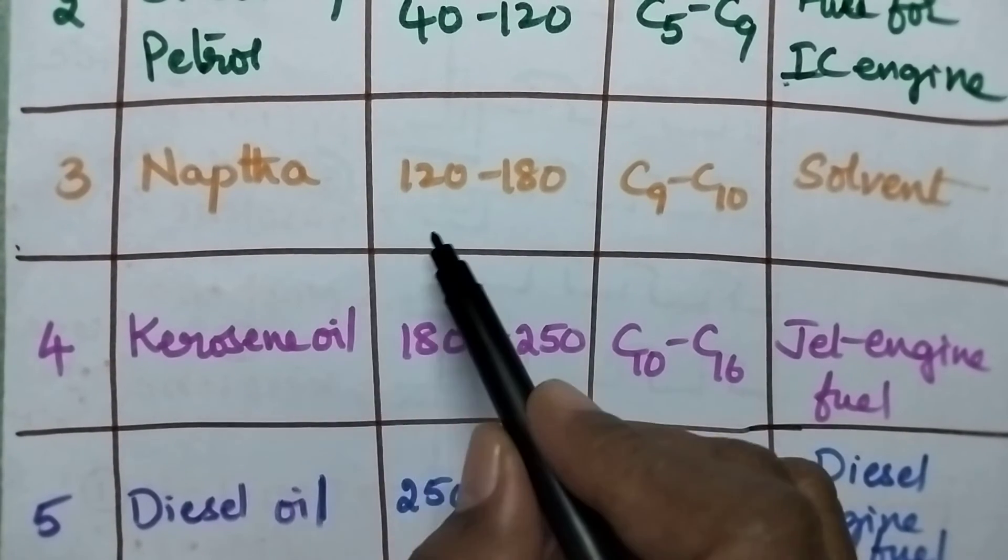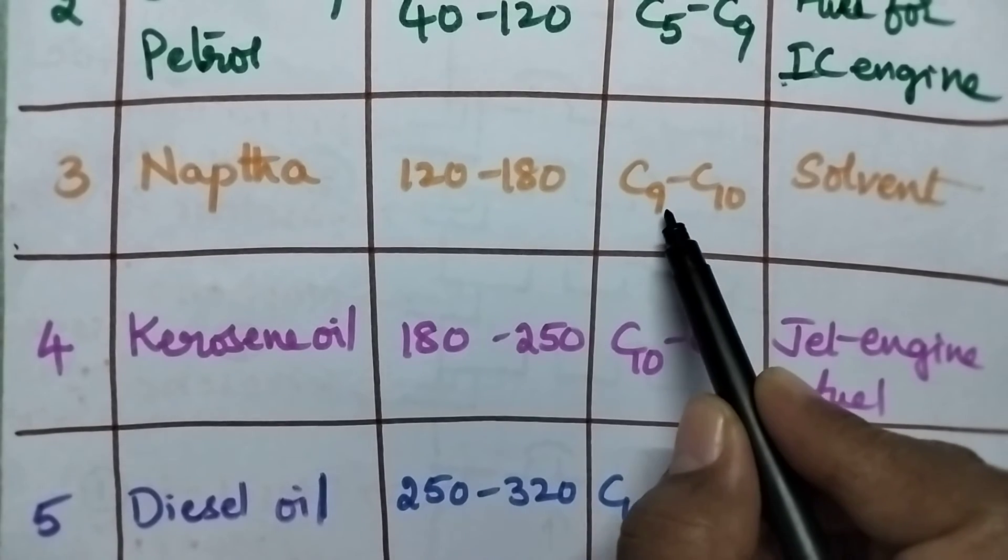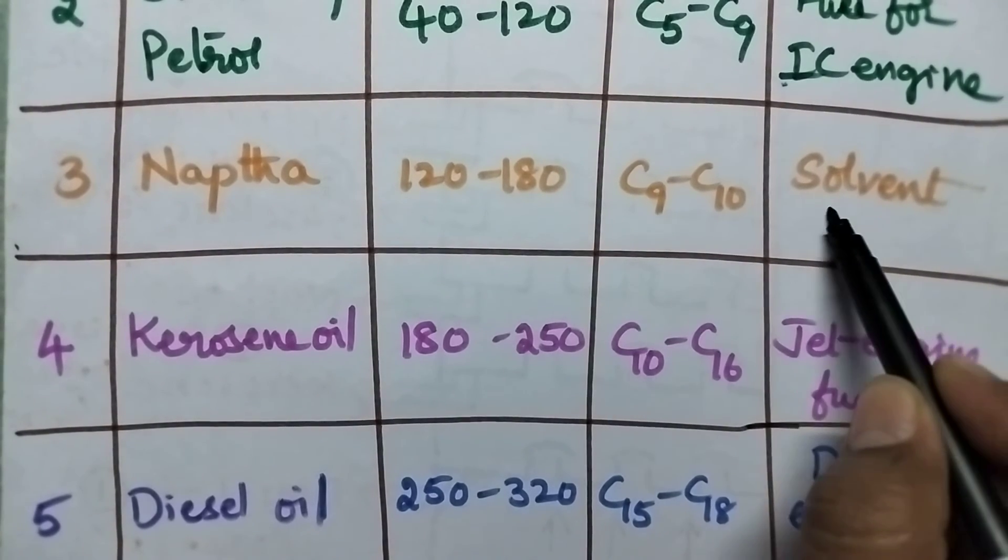Next fraction is naphtha. Its boiling point is 120 to 180 and its composition is C9 to C10. It is also used as a solvent.